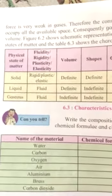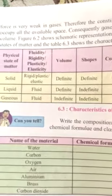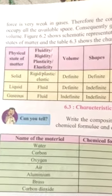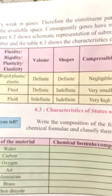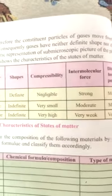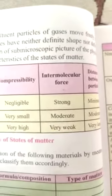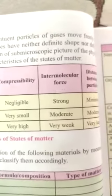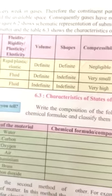These are the properties which you have done. You have to read this table — it will come for MCQ or objectives. Solid is rigid, plastic, or elastic; it has definite volume and definite shape. It cannot be compressed. Intermolecular force is strong and distance between particles is minimum. Similarly, liquid and gases are also in the table.